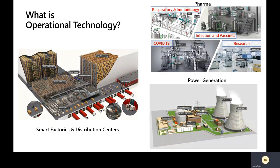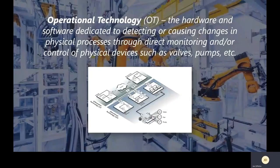Let's start with what is operational technology. There are a number of different customers we deal with: smart factories, distribution centers, pharma technologies, power generation, and things like that. Each one has different operational technology equipment — from robotics to valves and pumps. Power generation includes cooling towers, turbines, containment buildings, and control rooms. OT is defined as the hardware and software dedicated to detecting or causing changes in physical processes through direct monitoring and control of physical devices such as valves and pumps.